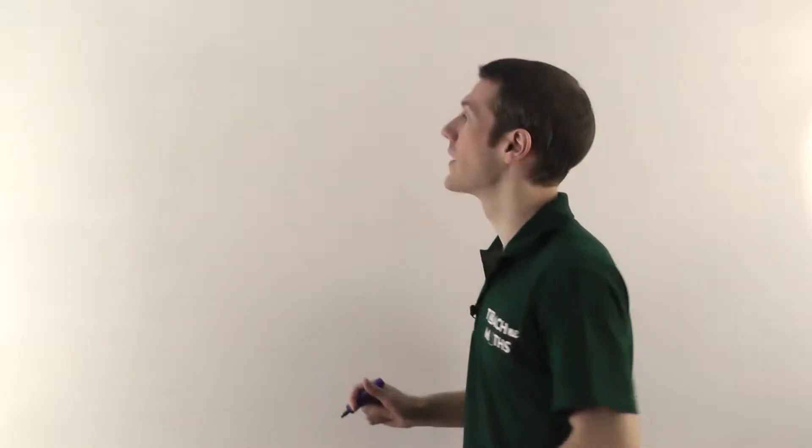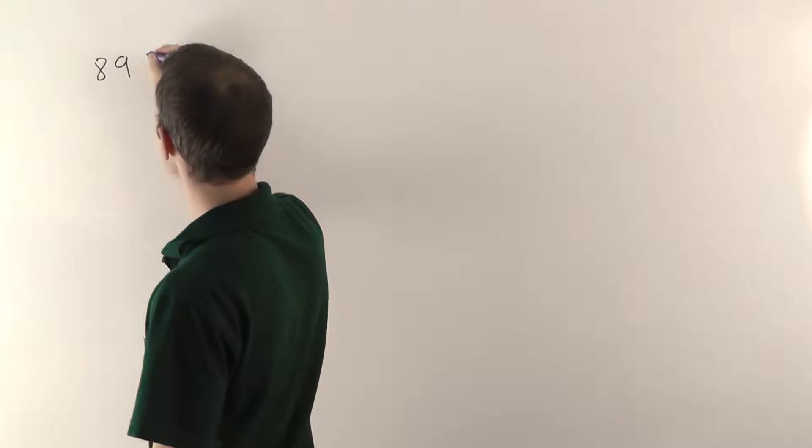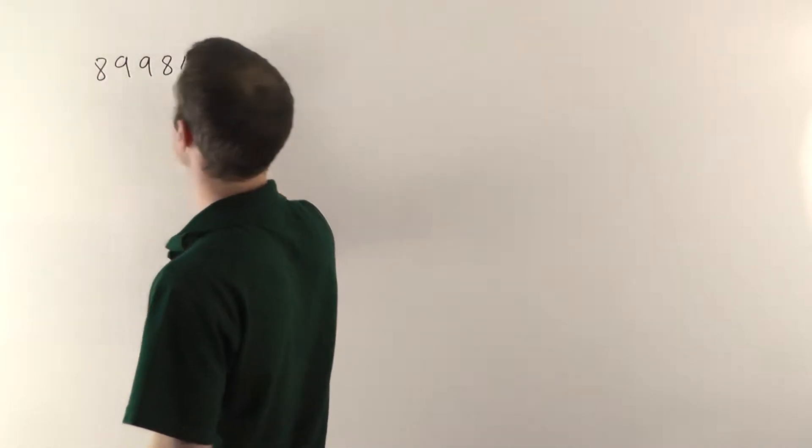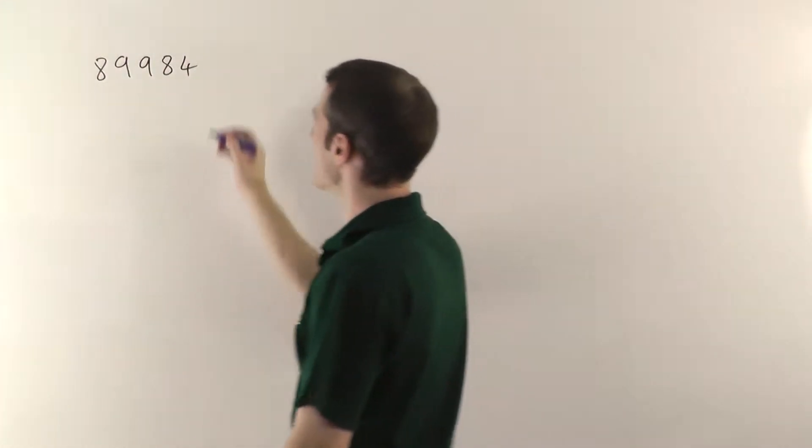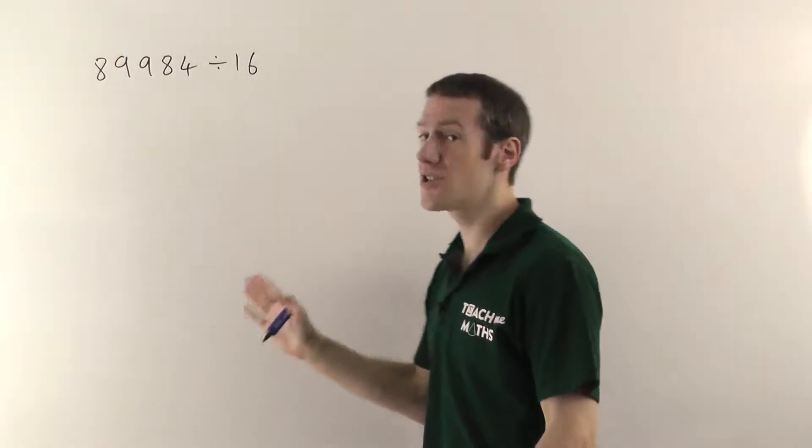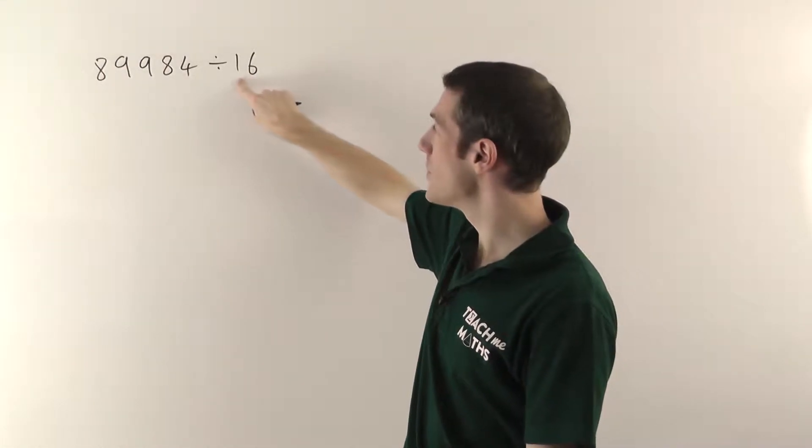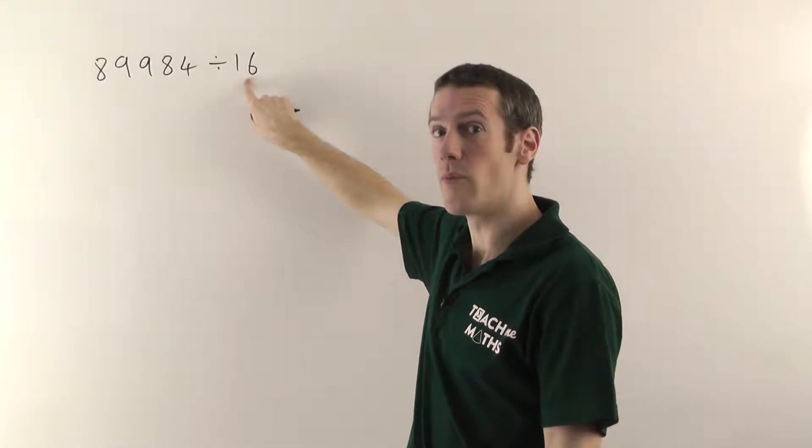So this is long division. I've got a nice big number for us to divide into. We're going to do 89,984 divided by 16. The reason you know this is long division and not short division is because the number here has got two digits.